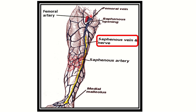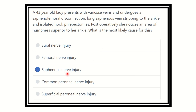In this picture of the whole lower limb, we can see both the vein and nerve. The saphenous vein arises from the dorsum of the foot and travels upward, finally opening into the femoral vein through the saphenous opening. The nerve running very close to it is the saphenous nerve. Our final answer is saphenous nerve injury, because the saphenous nerve is very close to the long saphenous vein and may be damaged during stripping, causing numbness in the area it supplies.